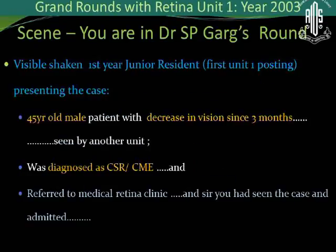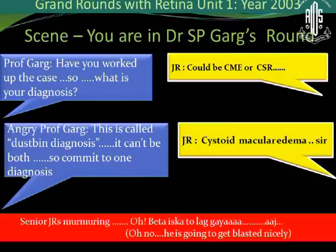The visibly shaken JR presented the case something like this: a 45-year-old male patient with decreasing vision since three months was seen by another unit, diagnosed as CSR or CME, and referred to the medical retina clinic. Sir, you had seen the case and admitted it. Professor Gerg asked, have you worked up the case — what's your diagnosis? He said it could be CME or CSR. Then Professor Gerg got angry and said, this is called a dustbin diagnosis. It cannot be both, so commit to one diagnosis.